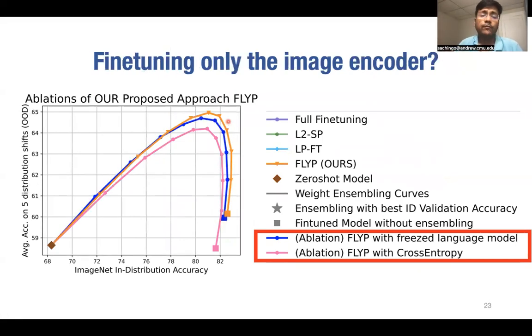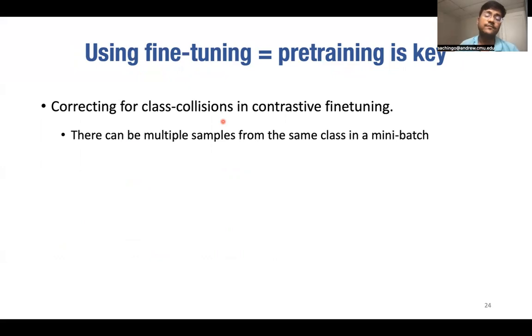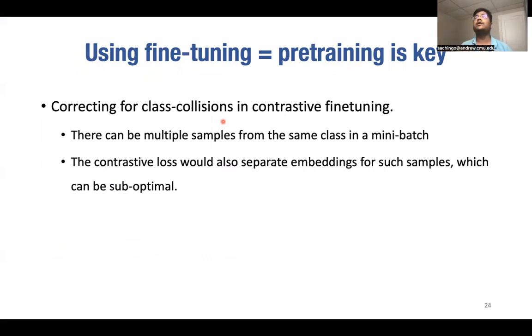Similarly, we also explore what if you optimize just the image encoder using the contrastive loss. However, that also performs sub-optimally. This highlights that fine-tuning exactly the way you pretrain is important. Finally, note that we are using contrastive loss for fine-tuning and there can be multiple samples from the same class in the mini-batch. And given the use of contrastive loss, this can be sub-optimal. Why? Because contrastive loss would try to separate the embeddings for all the samples and this can be hurtful if two samples are from the same class. In the ablation, we tried accounting for such collisions by masking these samples or ensuring that the batch is formed in a specific way. However, we observed that this hurts the accuracy. This again highlights that fine-tuning exactly the way you pre-trained is the reason for good performance of our proposed approach.